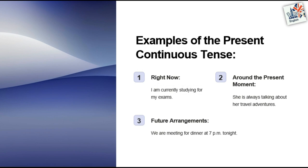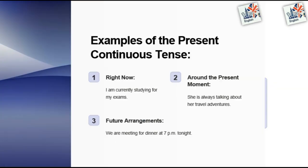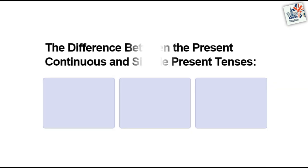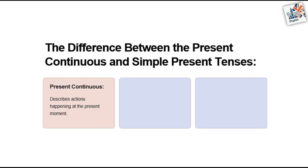Examples of the present continuous tense. One — right now: I am currently studying for my exams. Two — around the present moment: She is always talking about her travel adventures. Three — future arrangements: We are meeting for dinner at 7 p.m. tonight.